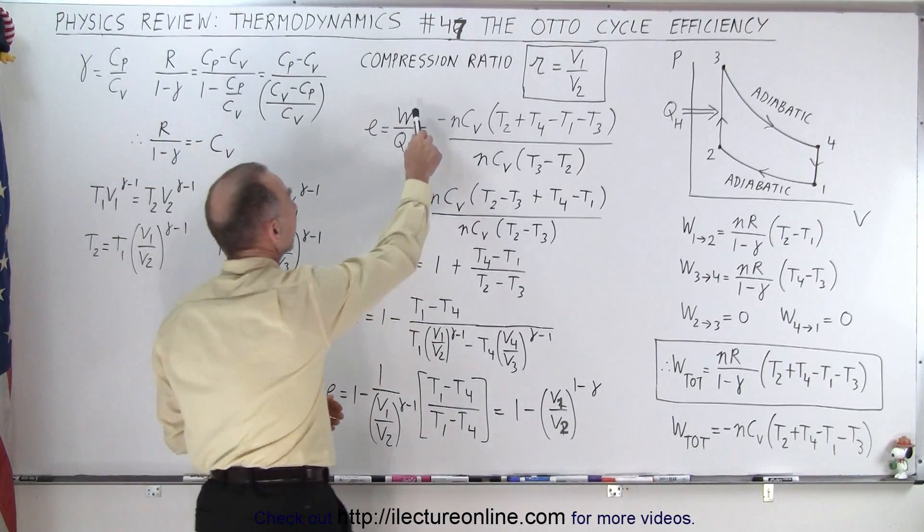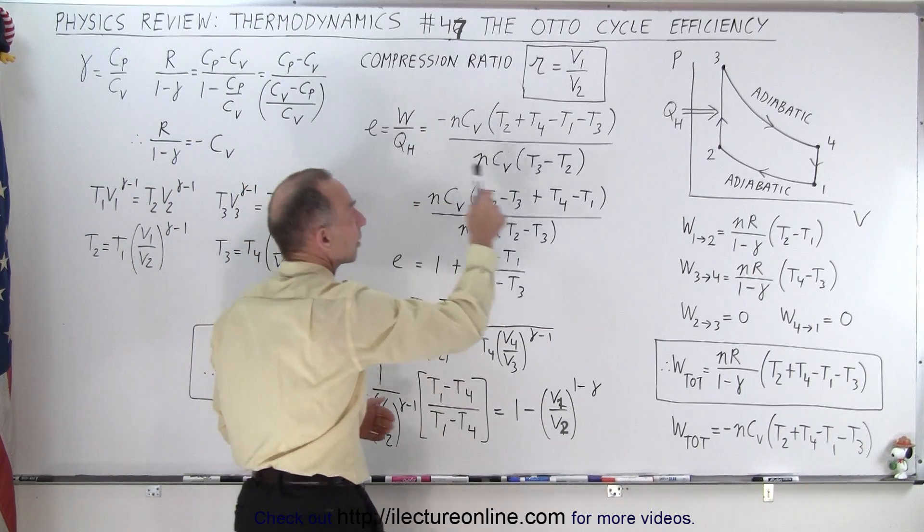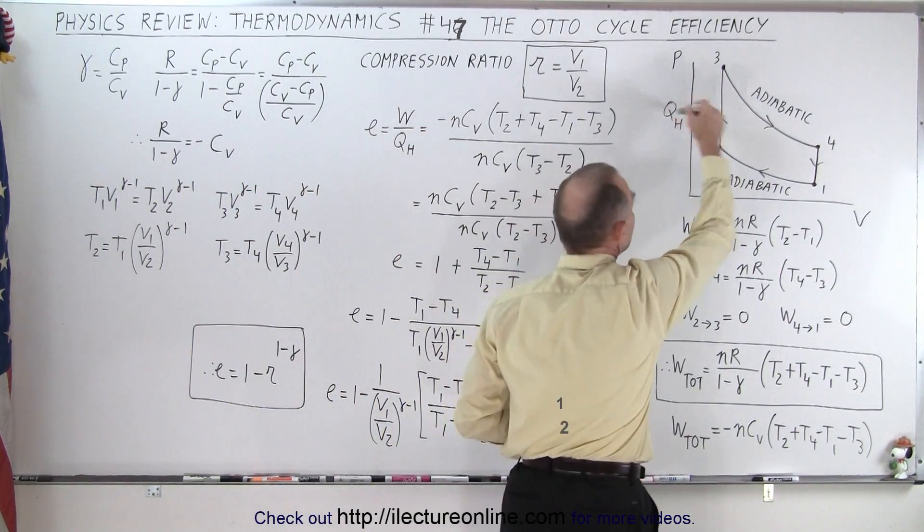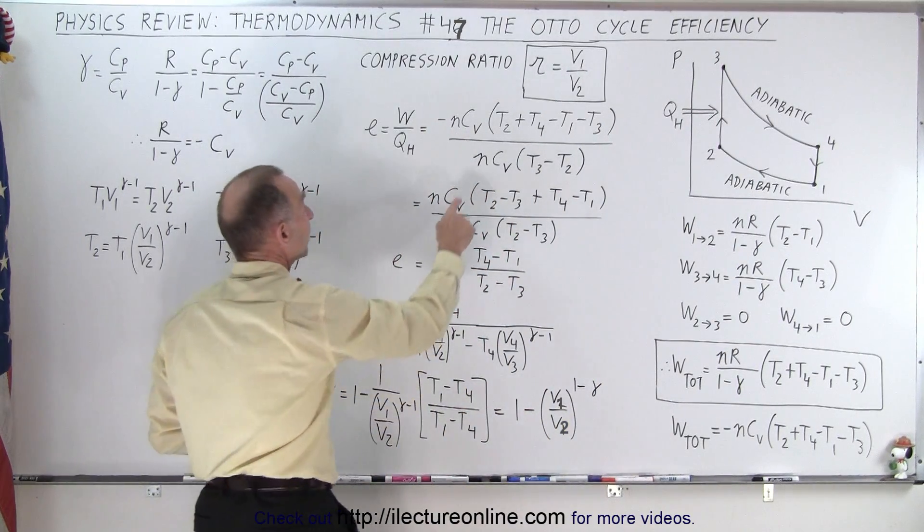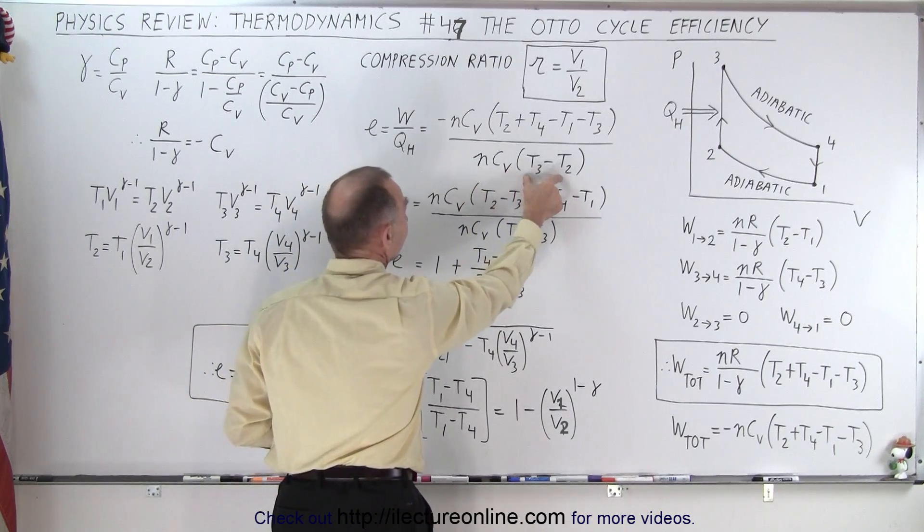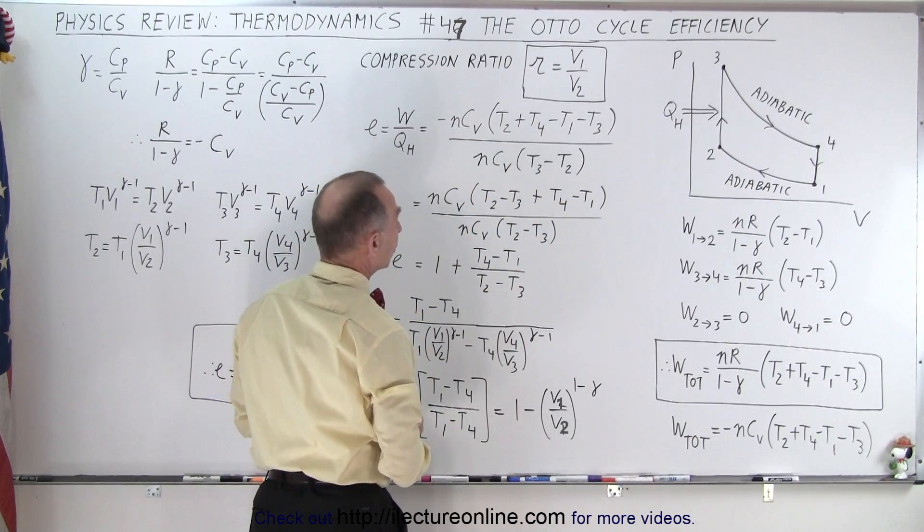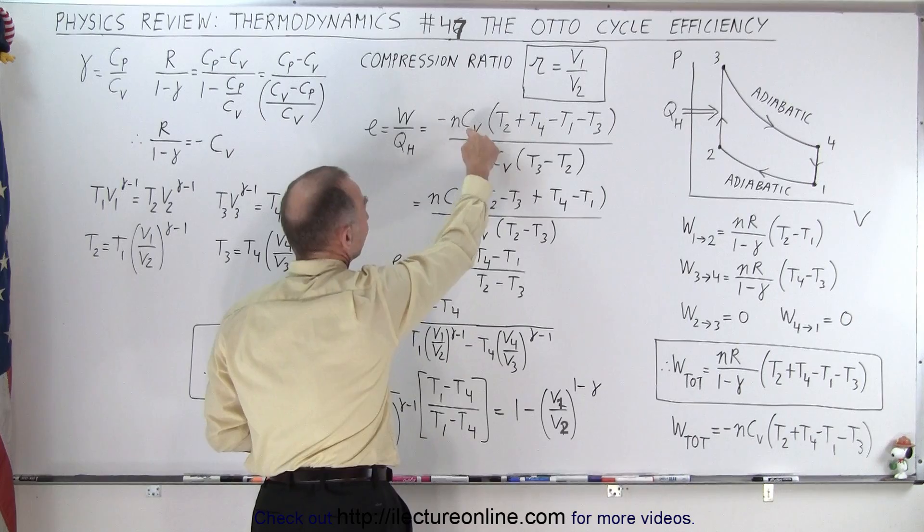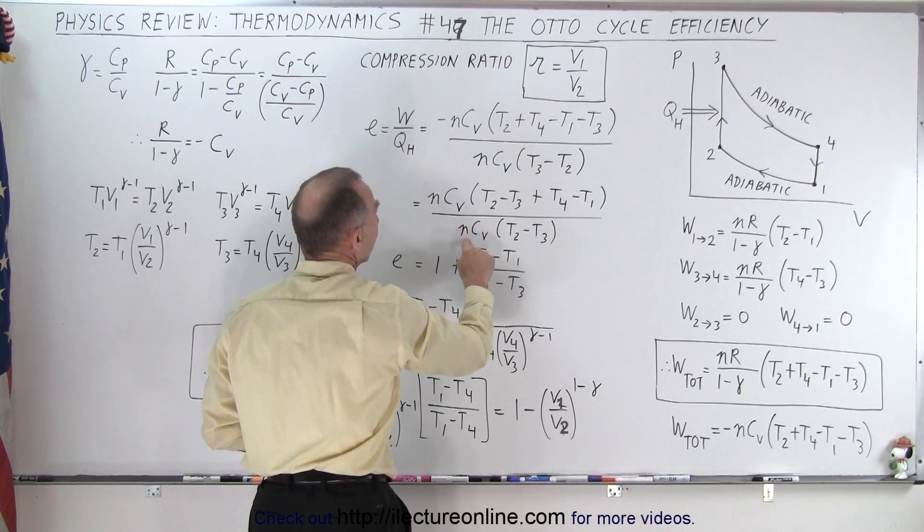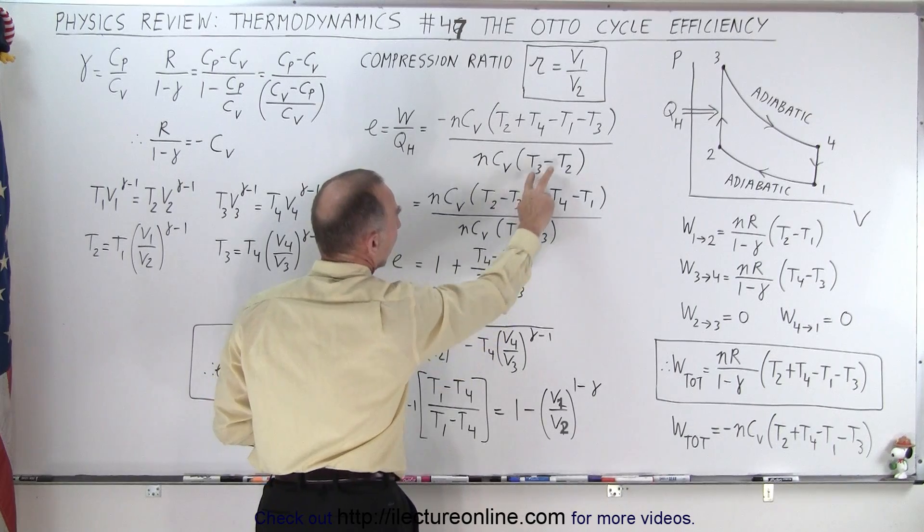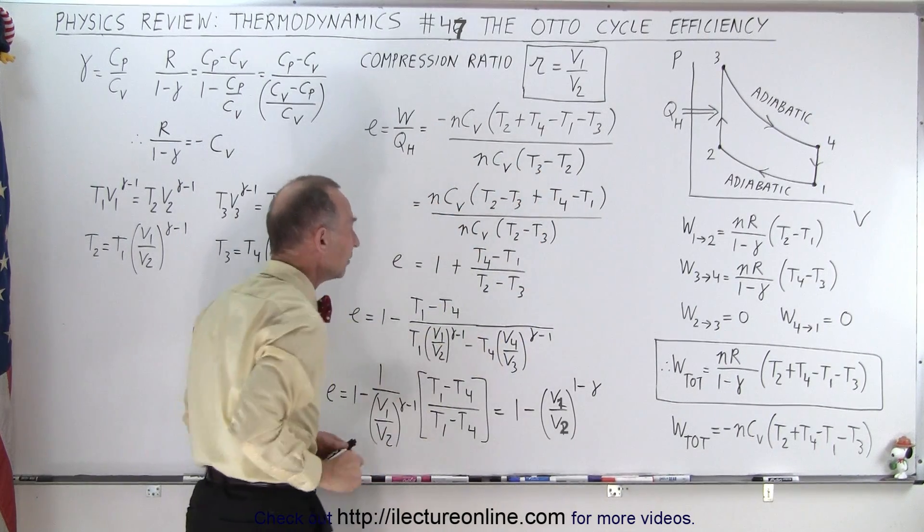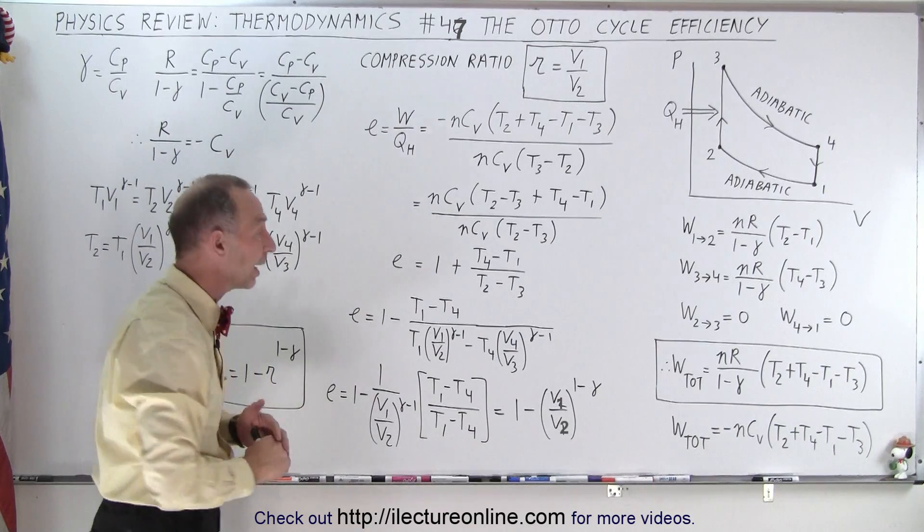Now we have the work done divided by the heat added during the hot process. Right here we're adding heat from 2 to 3. Since that is an isovolumetric process, the heat added will be nCv times the difference in the temperature. Notice we have an nCv in the numerator and nCv in the denominator. We're going to get rid of this negative sign by flipping the order to T3 minus T2.